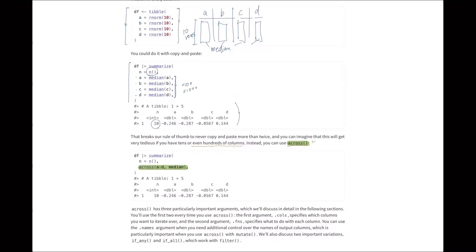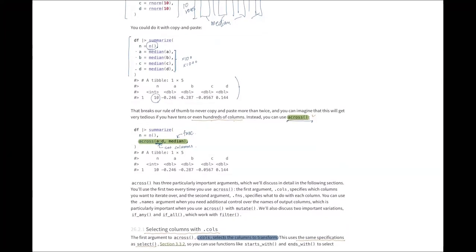One of the functions we can use is called the `across()` function. When we have this `summarize()`, within it we write the `across()` function. The first argument is setting the columns — A through D by name — and the next argument is the function to be applied to each column. That's how you do the iteration process. You will see the same result as the previous code, but the latter approach is much simpler.